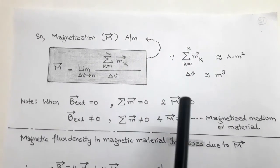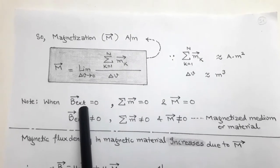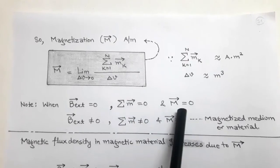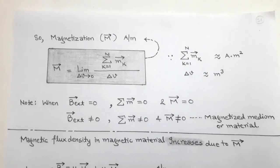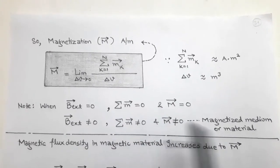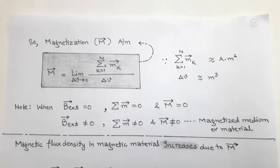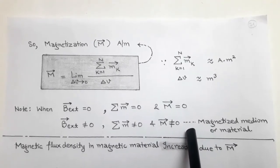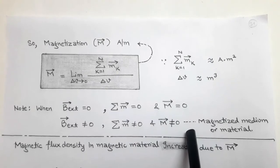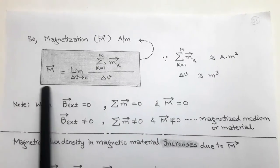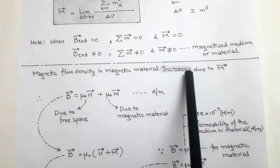When there is no external magnetic field, there is no net dipole moment and hence no magnetization. But when there is an external magnetic field, there is a net dipole moment and there is magnetization. When the magnetic material is placed in an external magnetic field, the material gets magnetized, and consequently the magnetic flux density in the magnetic material increases due to magnetization.